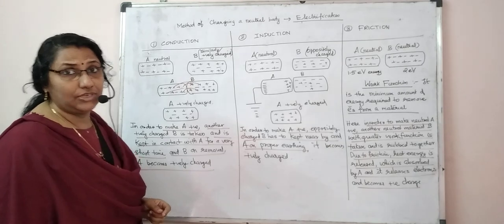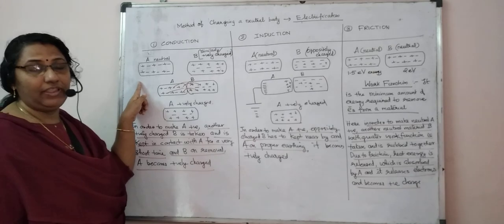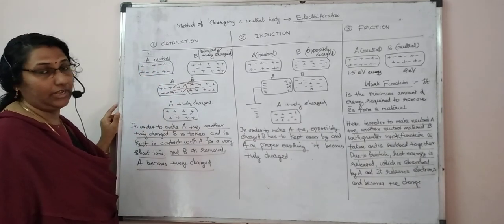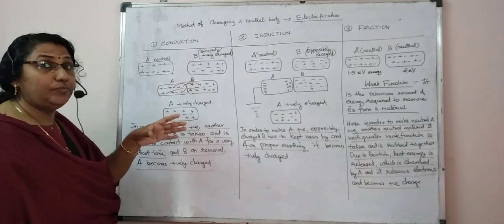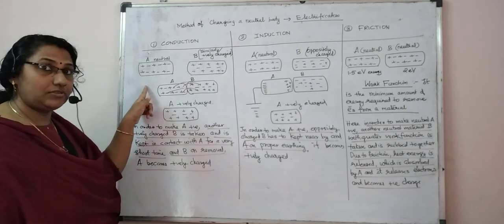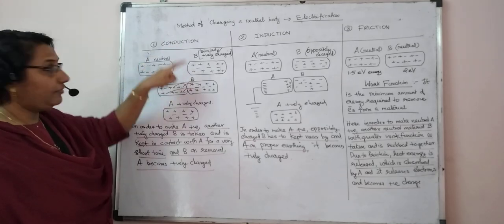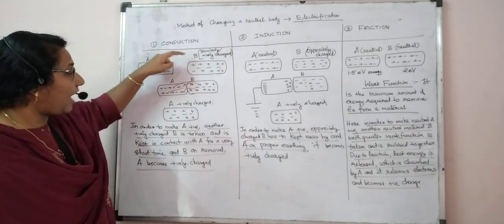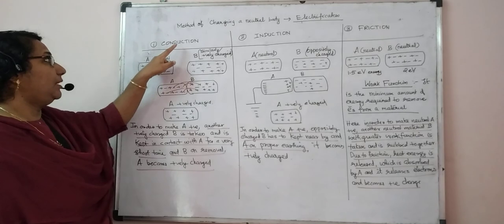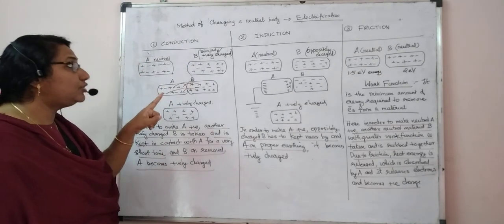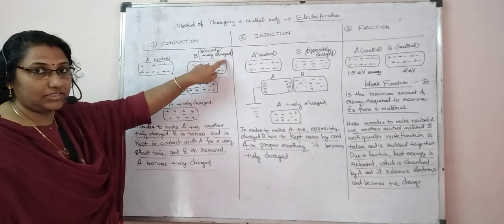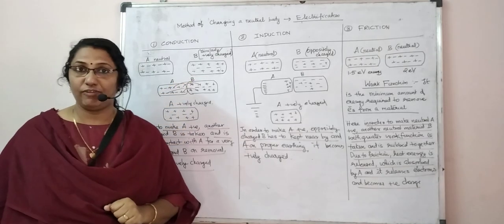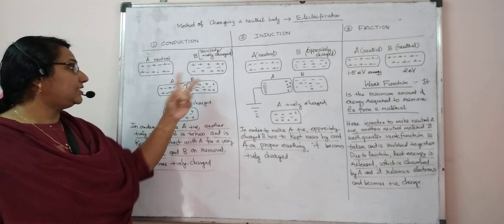Let us discuss electrification by conduction in detail. Suppose there is a neutral body A, which contains equal numbers of positive and negative charges — that is why it is neutral. To make neutral body A positive by conduction, we take another body B which is similarly — that is, positively — charged, and keep A and B in contact.